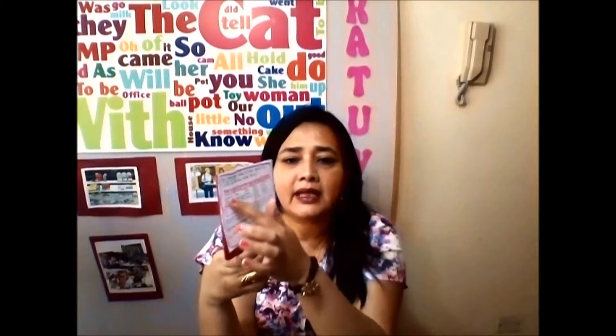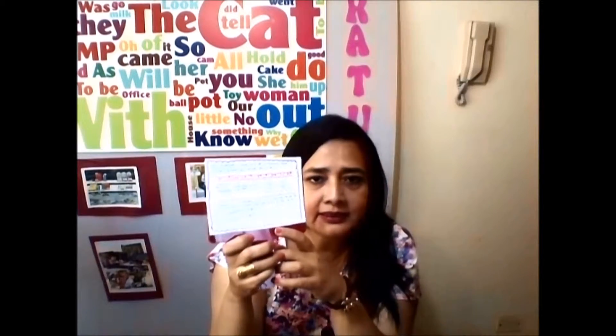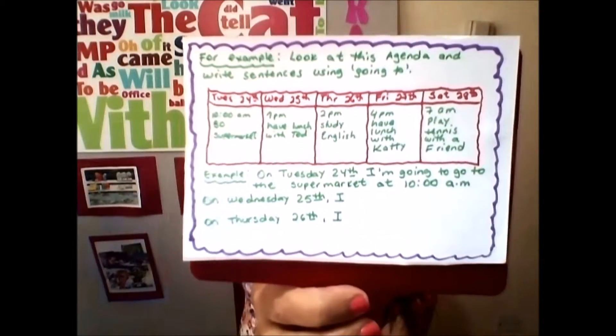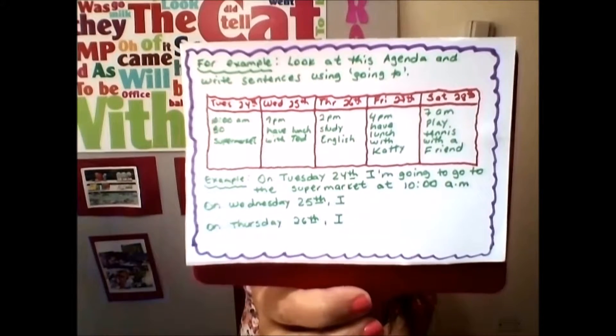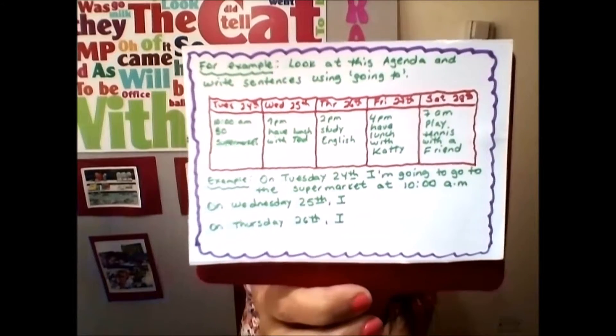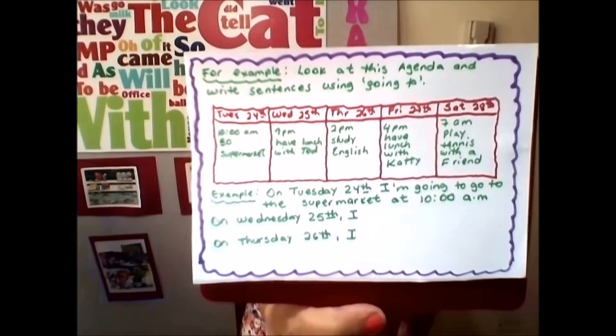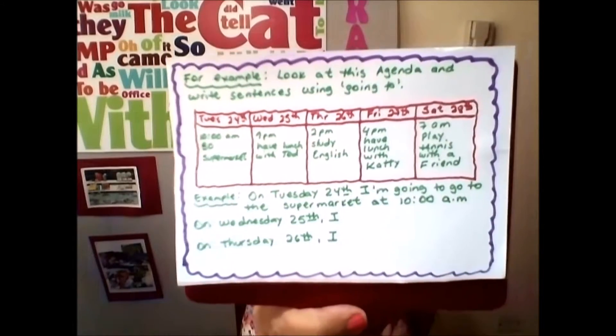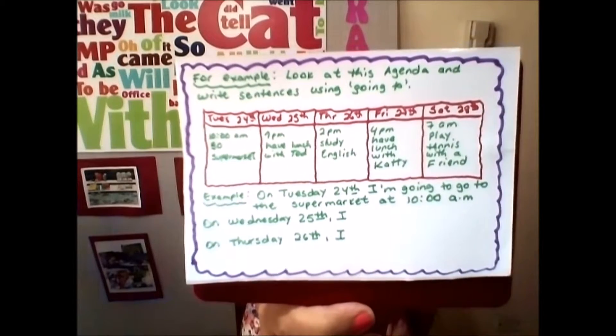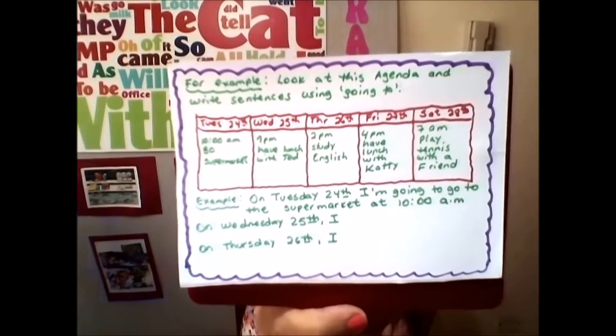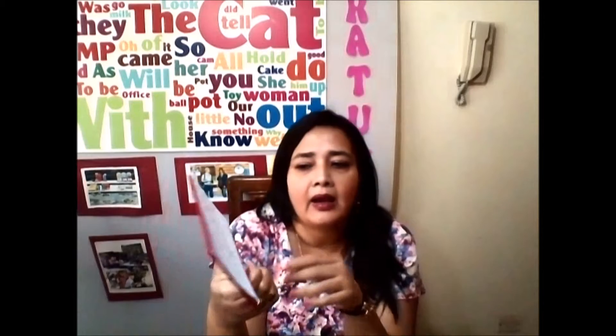Con la información que tenemos en esta agenda imaginaria vamos a completar oraciones. En nuestro siguiente video vamos a completar oraciones, pero aquí tenemos el ejemplo del primer día: On Tuesday 24th, I'm going to go to the supermarket at 10 am. Ahora vamos a completar on Wednesday 25th, on Thursday, on Friday, and on Saturday — pero eso lo vamos a hacer en el siguiente video.